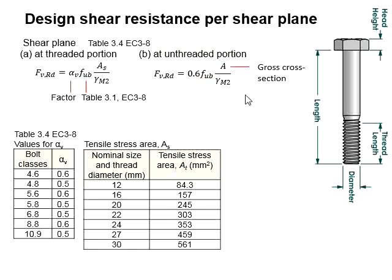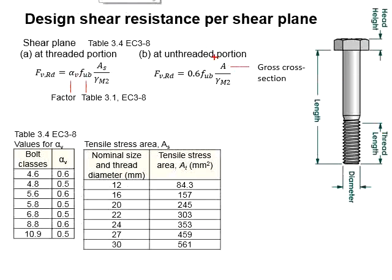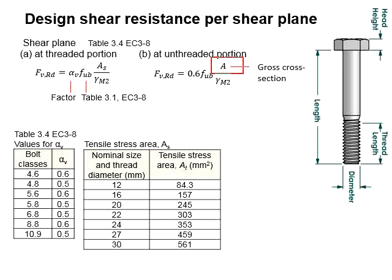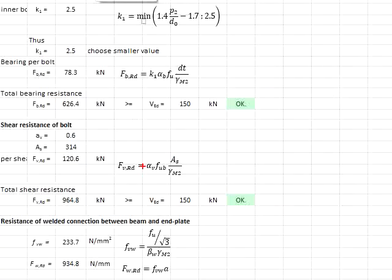The FUB here refers to the table. Bolt class 8.8 will have FUB equal to 800. The area here refers to the gross cross-sectional area, which is obtained by multiplying π r² based on the size of the bolt. There is a factor of 0.6 and a partial factor of safety γm2, which is equal to 1.25. Substituting into the formula, you will get the shear resistance per shear plane as 120.6 kilonewton.